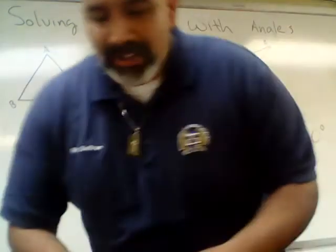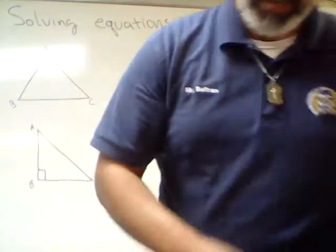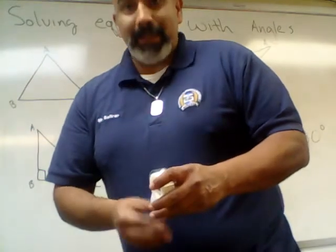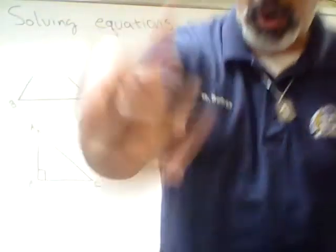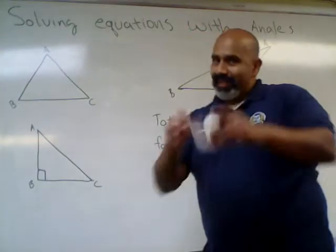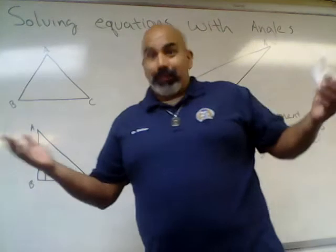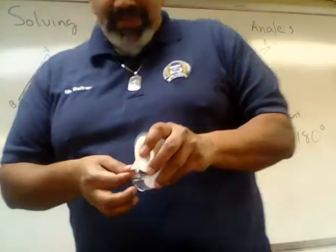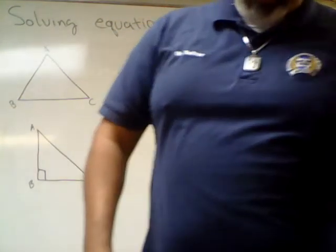So it doesn't matter the triangle. As we saw here, we have three different types of triangles, and I tore the corner off of each triangle and re-taped it onto the straight line to show, to prove, to give you evidence — giving you evidence on why the three corners of a triangle equal 180 degrees.